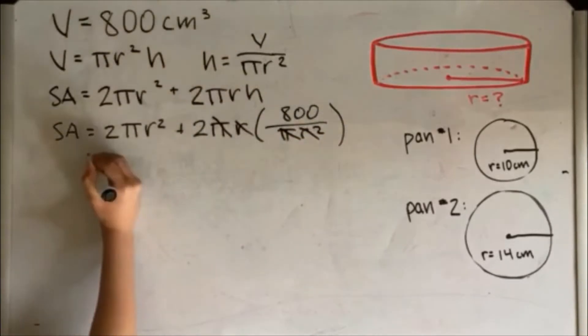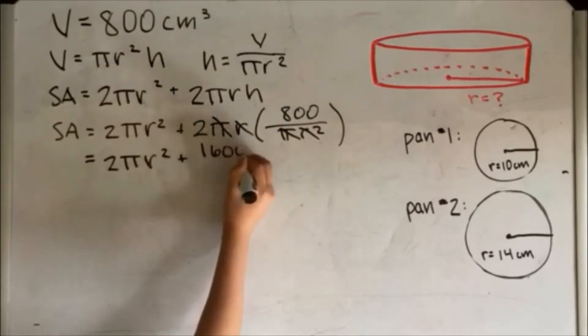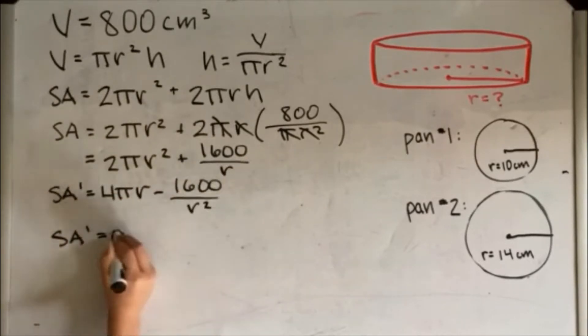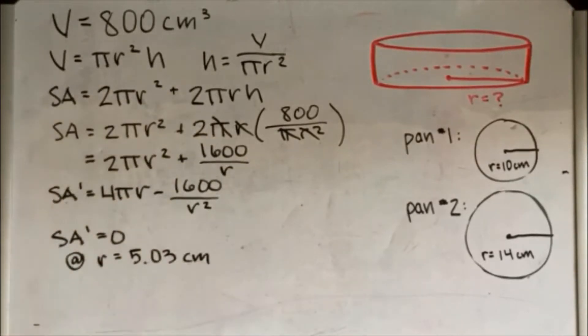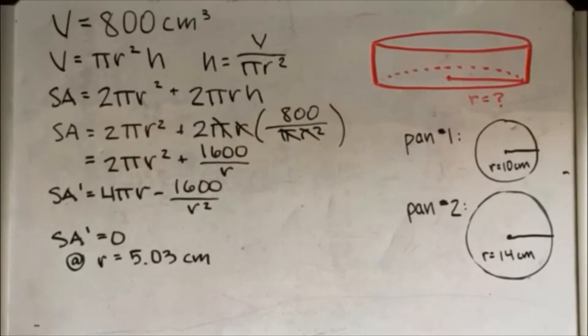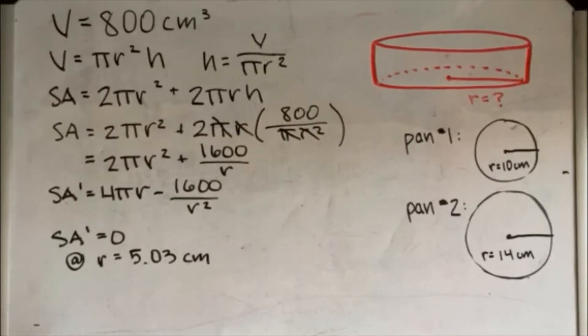After simplifying, we can derive it and find SA prime and then find where this changes from negative to positive to find its minimum. The radius for the surface ends up being 5.03 cm, meaning I should use pan number 1, which has a radius closer to this value.